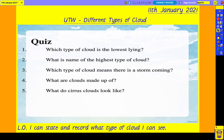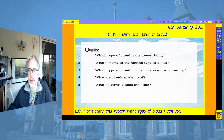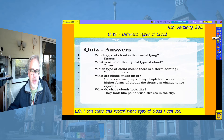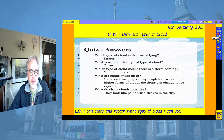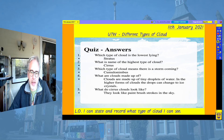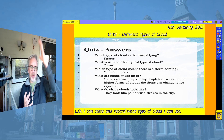How did you do with this quiz? Let's have a look at some of the answers. Which type of cloud is the lowest lying? That's the stratus. What is the name of the highest type of cloud? Cirrus. What type of cloud means there is a storm coming? Cumulonimbus — and those are the ones which are really stacked up high. They're also ones which aeroplanes have to try and avoid.